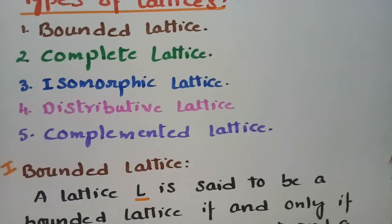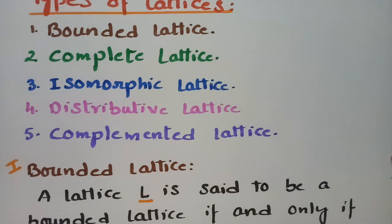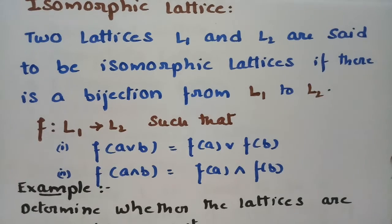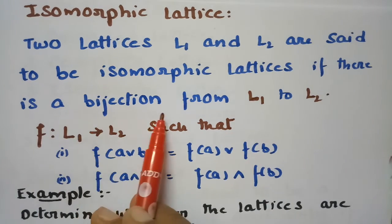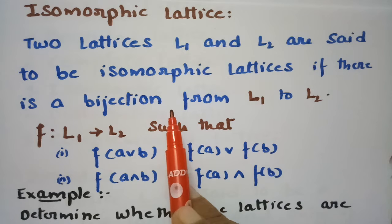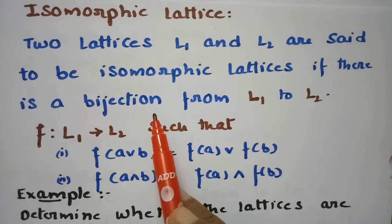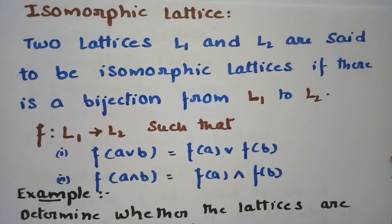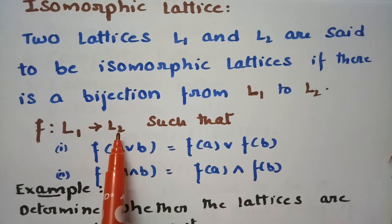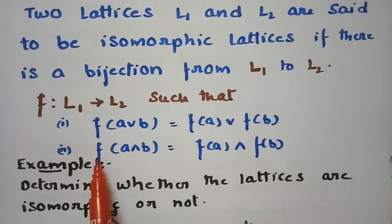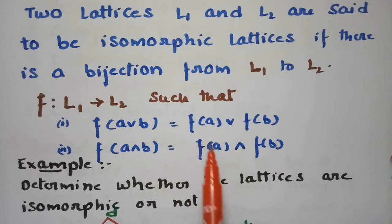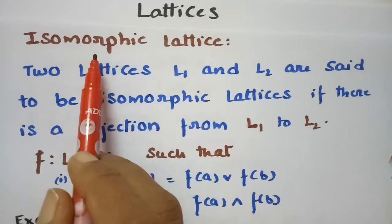The next type is the isomorphic lattice. Two lattices L1 and L2 are said to be isomorphic if there is a bijection F from L1 to L2 — meaning F is one-to-one and onto — such that F(A ∨ B) = F(A) ∨ F(B) and F(A ∧ B) = F(A) ∧ F(B) for all elements.